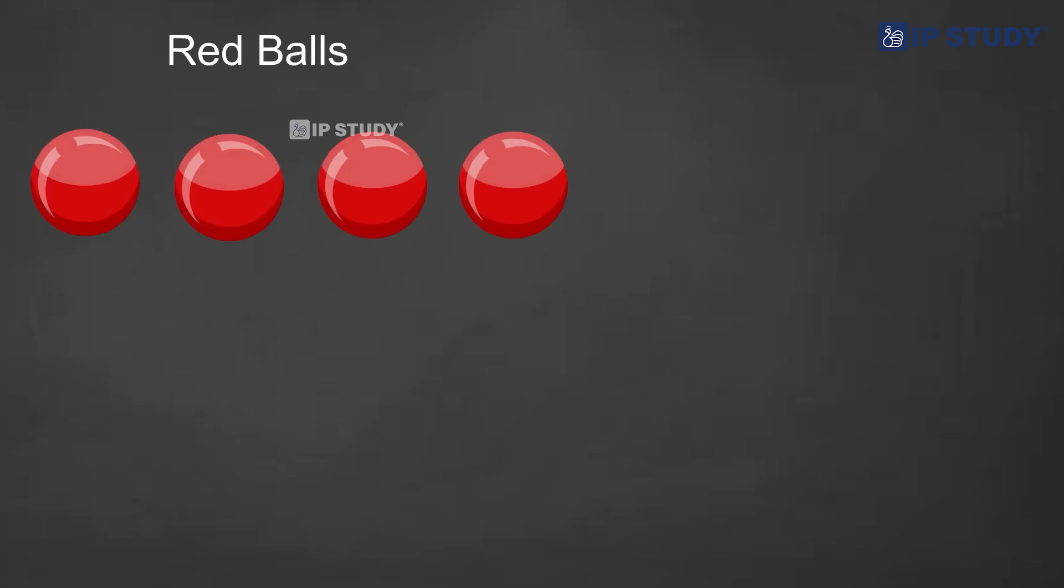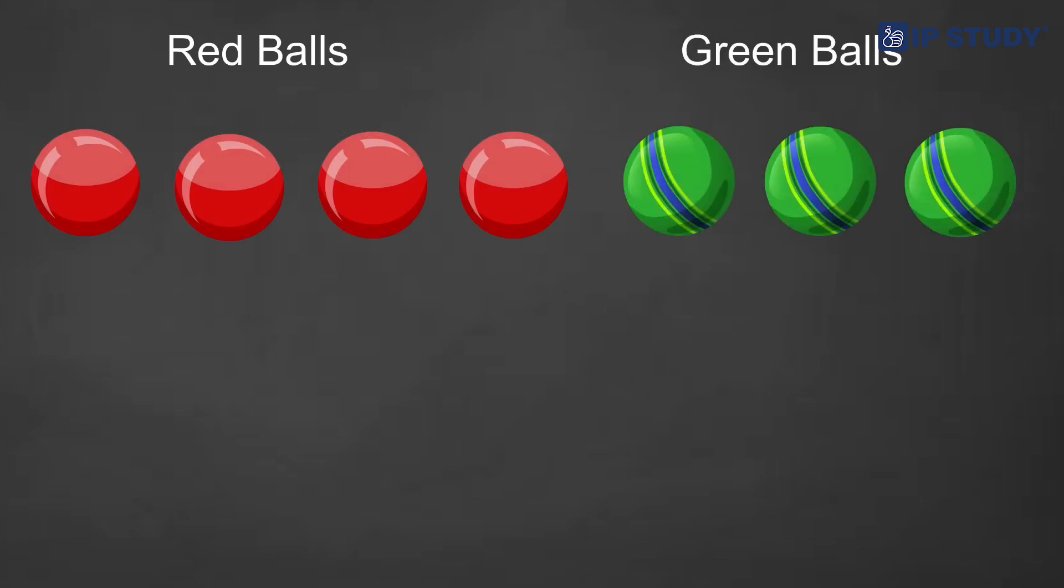Now let's add two numbers. You have four red balls, you get three green balls. How many balls in total? Add four plus three. What's four plus three? Yes, seven. So you have seven balls.